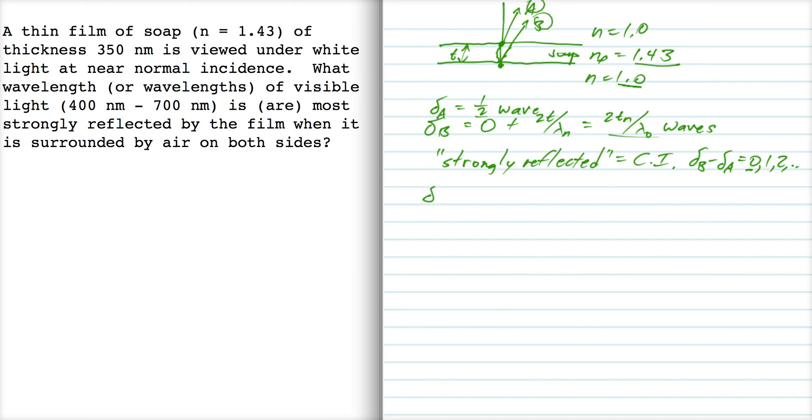We'll set delta B minus delta A equal to zero waves and see where that takes us. So two t over lambda-naught minus a half is equal to zero, alright? So that means two t over lambda-naught is equal to a half,